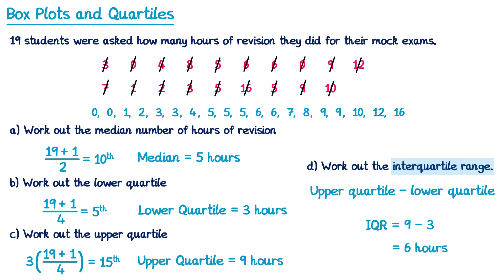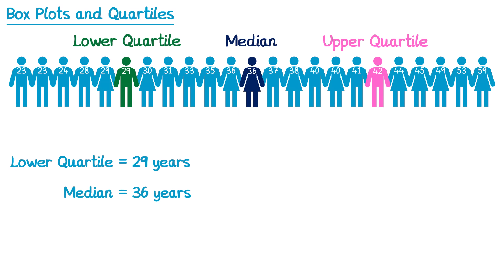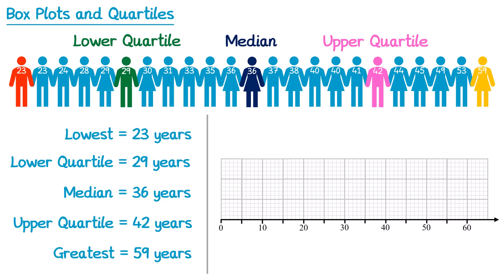Now let's return once again to our list of adults. We've already identified the lower quartile which is 29 years, the median which is 36 years, and the upper quartile at 42 years. Two other notable values are the youngest person — the lowest value, which is 23 years — and also the oldest person — the greatest value, which is 59 years. If you have all five of these bits of data you can draw something called a box plot. To draw a box plot you need a scale, and this one I'm going to label as years since this is the ages of people.